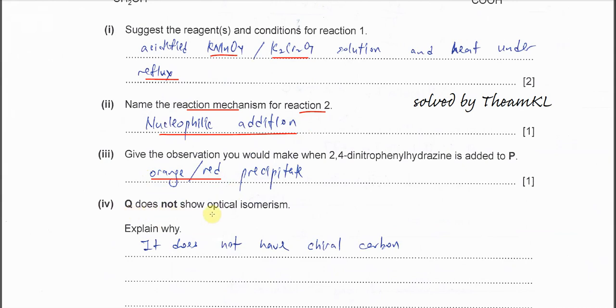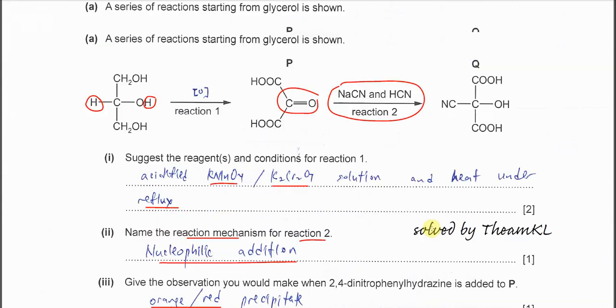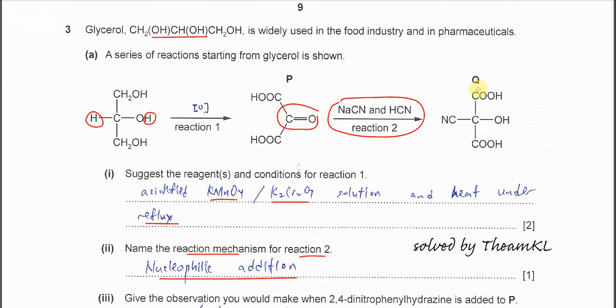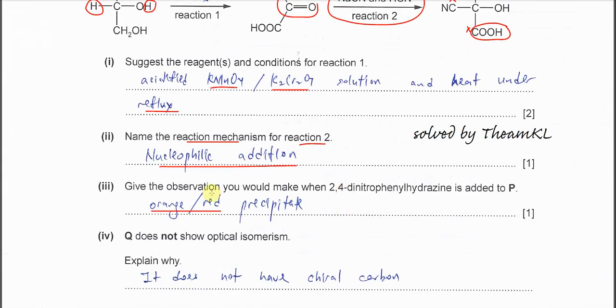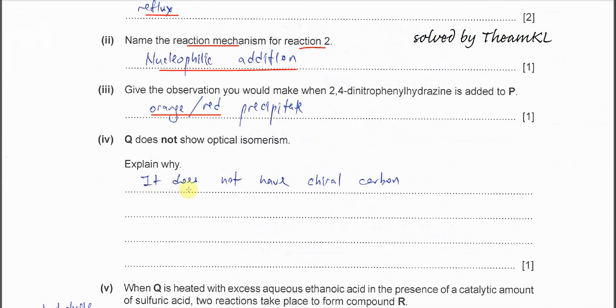Part 4: Q does not show optical isomerism. Why? Let's look at whether it has chiral carbon or not. This is not chiral carbon, this is not chiral carbon, this is not chiral carbon. This carbon also cannot be chiral carbon because it has two same carboxylic acid groups. So very easy - it does not have chiral carbon, that's all.